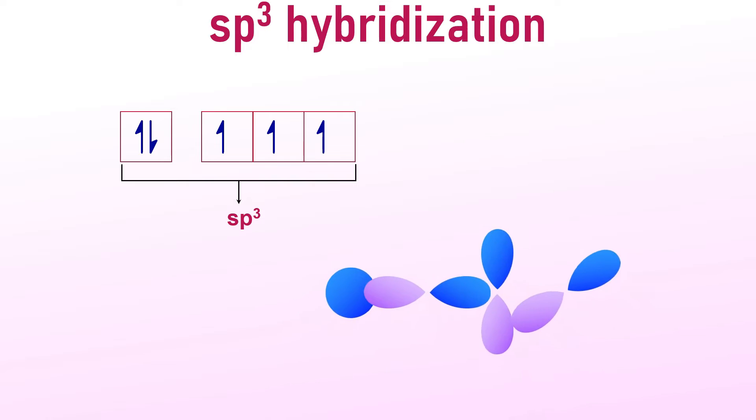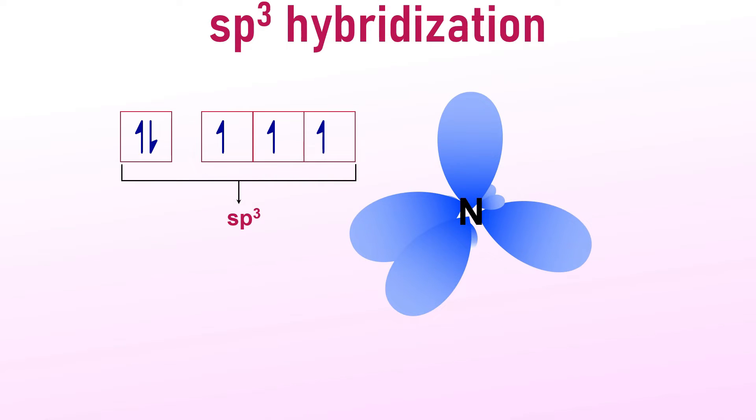With only four atomic orbitals participating in the hybridization, only four sp3 hybrid orbitals are created. Remember, the number of hybrid orbitals formed is equal to the number of atomic orbitals participating in the hybridization.